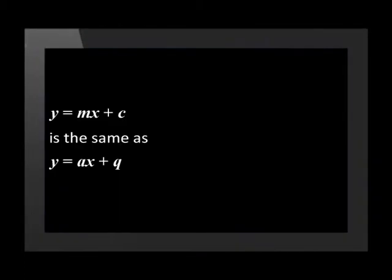But I thought the formula for the straight line graph was y equals mx plus c. You're right! This is just as correct as using y equals ax plus q. We can use any letters we want to. We have chosen to use a and q because this will help us later on when we compare straight line graphs with other types of graphs.